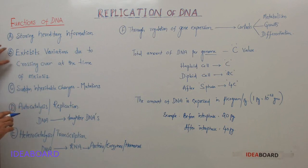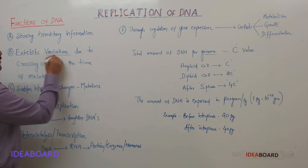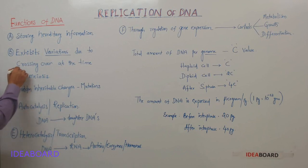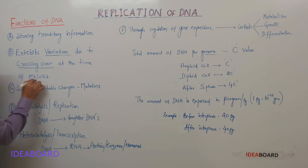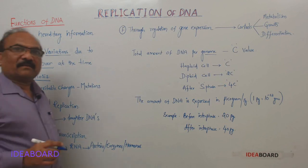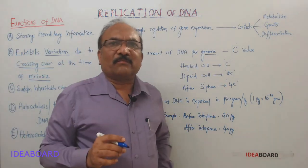That is the second function of DNA — it exhibits variations due to crossing over at the time of meiosis. Do not forget that crossing over occurs only at the time of meiosis, not during mitosis.